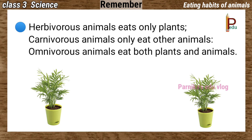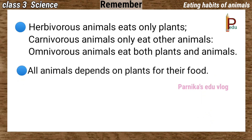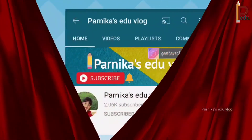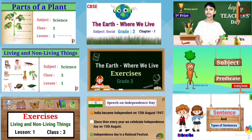Remember: herbivorous animals eat only plants, carnivorous animals eat only other animals, and omnivorous animals eat both plants and animals. All animals depend on plants for their food. Animals get and eat food in different ways — they have teeth and other body parts suitable to their eating habits. For more educational videos, please visit the channel and don't forget to subscribe.